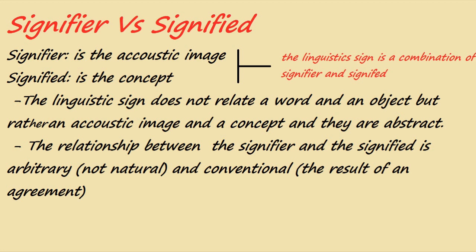The signified is what it means — the meaning, what it represents to you. When I say 'book,' that is the acoustic image, but the fact that you understand it is an object used to read and gain knowledge — that is the signified, the concept. Saussure defines the linguistic sign as a combination between the signifier and the signified; these two things cannot be separated. The linguistic sign does not relate a word and an object — it relates an acoustic image and a concept.